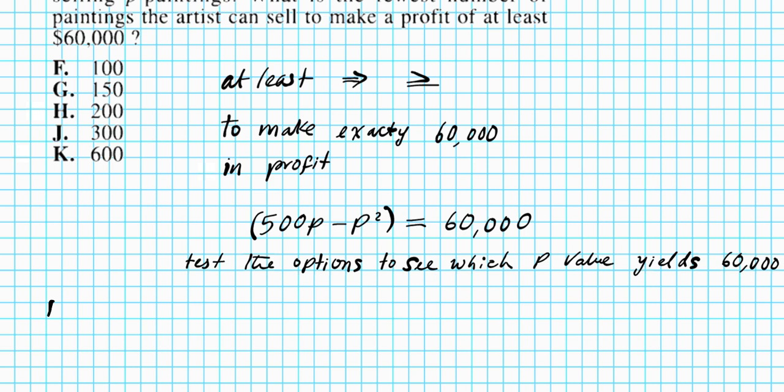So let's start with option letter F. Option F, we have p equals 100. If I plug that into this expression right here, the profit expression, do I get 60,000? That is the question. So let's do it.